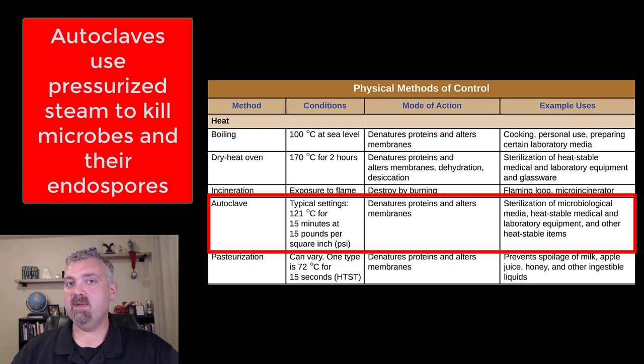The whole principle behind an autoclave is that if you increase the pressure, water boils at a higher temperature. Really key numbers I'm sure you'll be asked to know: a typical autoclave is going to boil water and turn it into steam at 121 degrees Celsius versus 100 at sea level for 15 minutes at 15 pounds per square inch. As the pressure goes up, the temperature goes up.